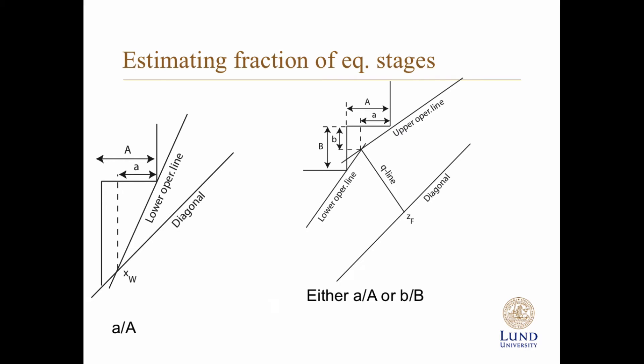Now we need to calculate fraction of equilibrium stages as well, and we will do that using horizontal lines. So we will look at the triangle we have drawn, and then take the distance here from this vertical line to immediately above the intersection between the upper and lower operating line, and compare that distance with the entire distance of that triangle.